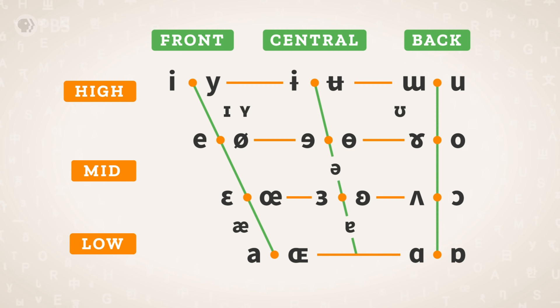That's where the International Phonetic Alphabet comes in, so we can write all the vowels in any spoken language clearly and unambiguously. We can start by figuring out what vowel sounds we need to represent. To do this, we'll look at which parts of the mouth are involved in making vowels. In other words, we'll map out the vowel space.